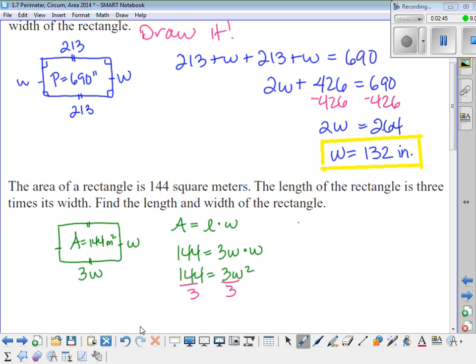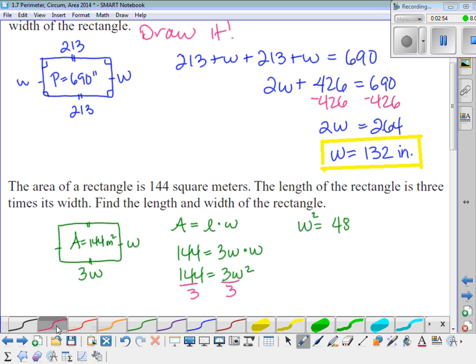And then I divide both sides by 3. And so I get that the width squared is equal to 48. So if I want to find out what the width is, I need to take the square root of both sides.